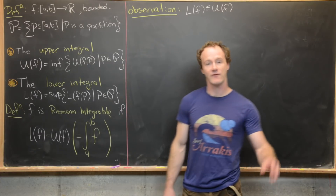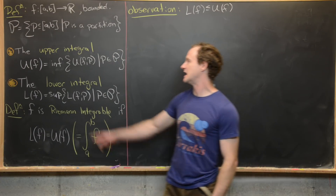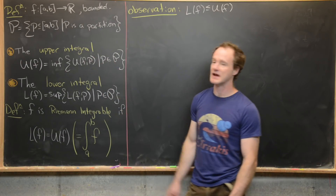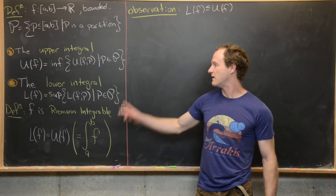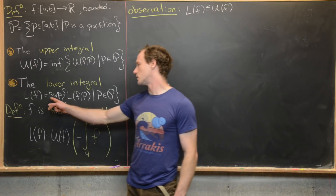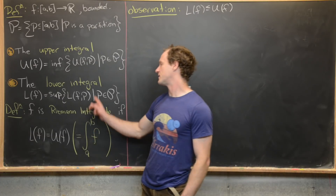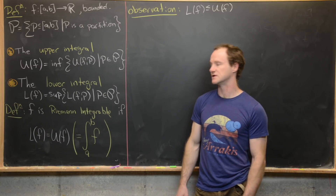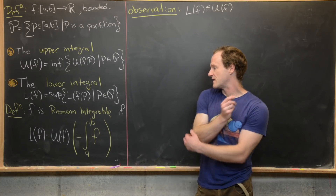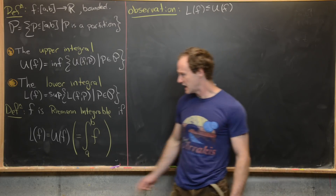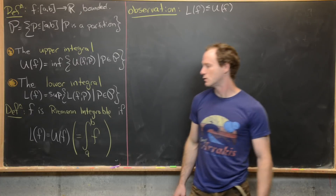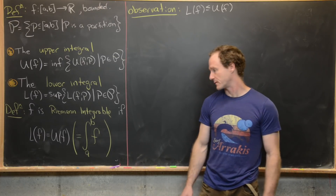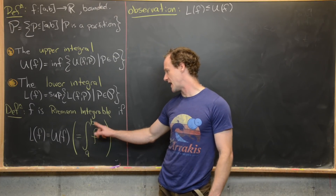The upper integral of f on this interval is the infimum of all upper sums as we let the partition range over all partitions of [a,b], and the lower integral is the supremum of all lower sums as we let the partition range over all partitions of [a,b]. Finally, we say that f is Riemann integrable if the lower integral equals the upper integral, and in that case we give it the familiar notation: the integral from a to b of f.